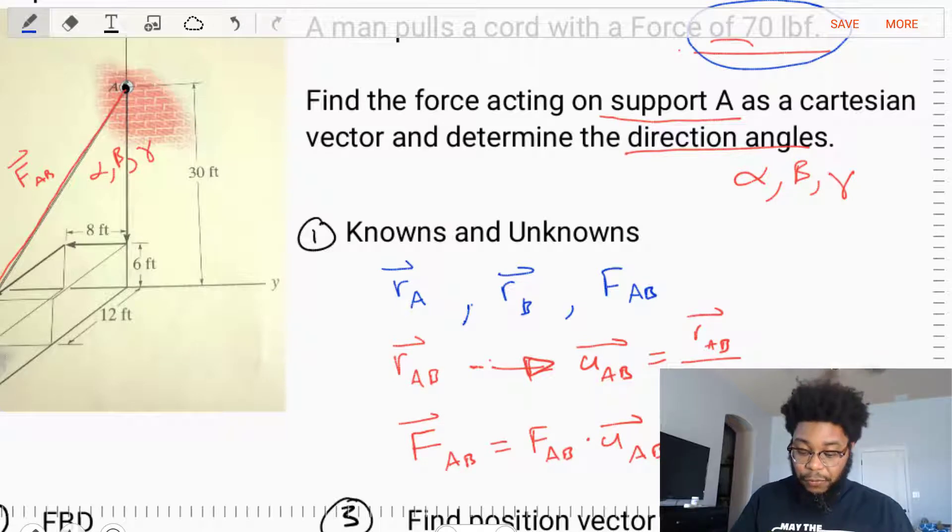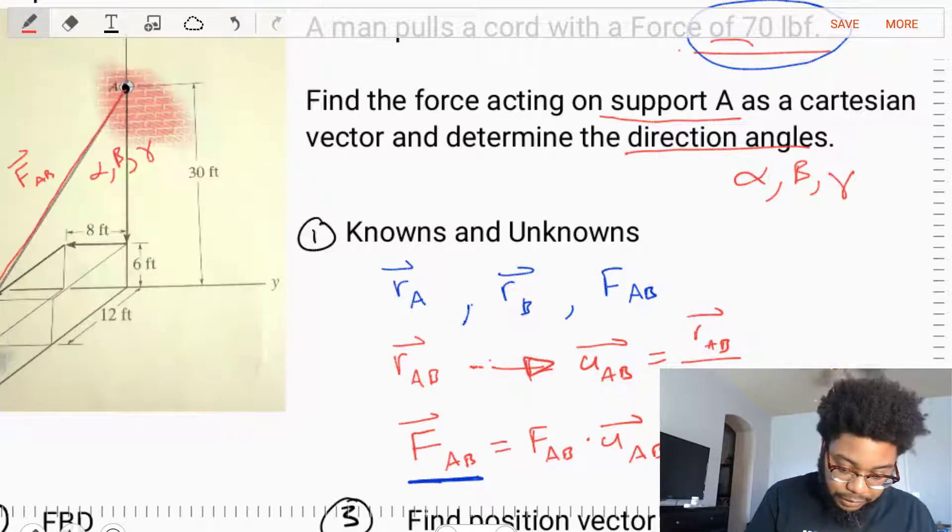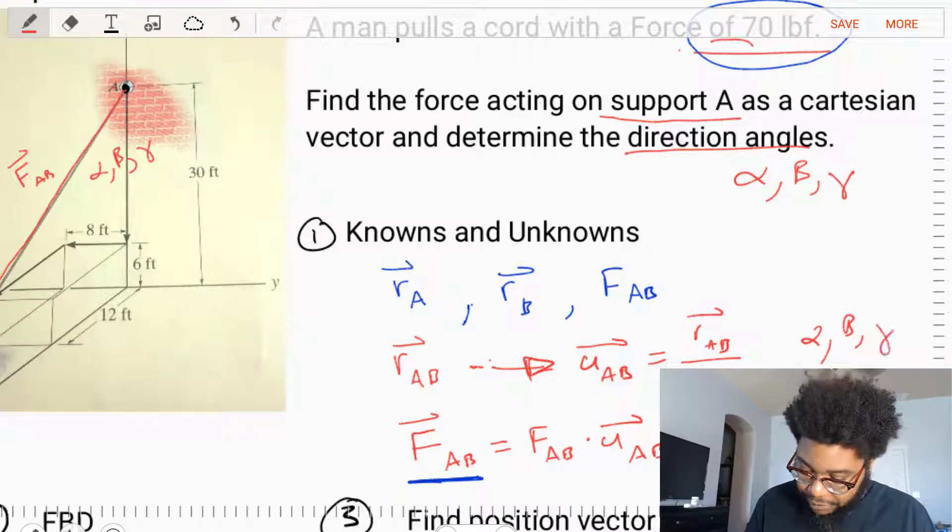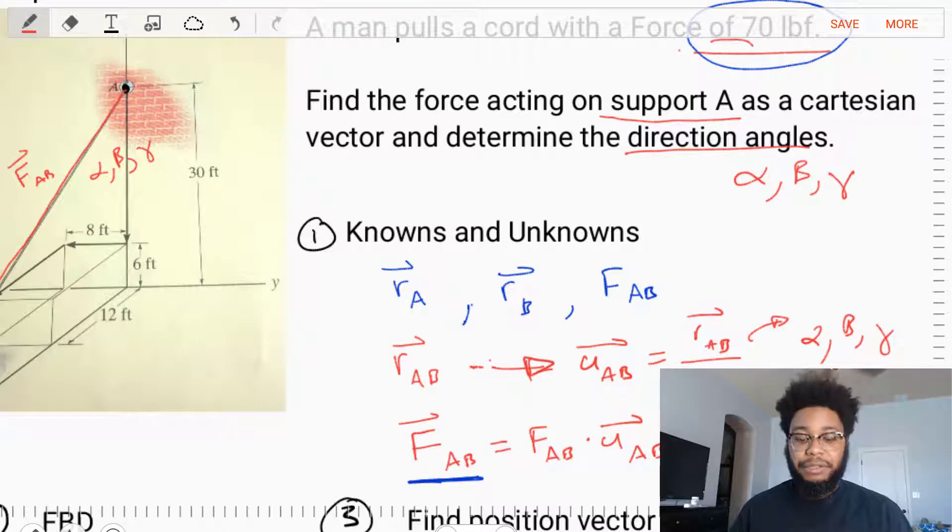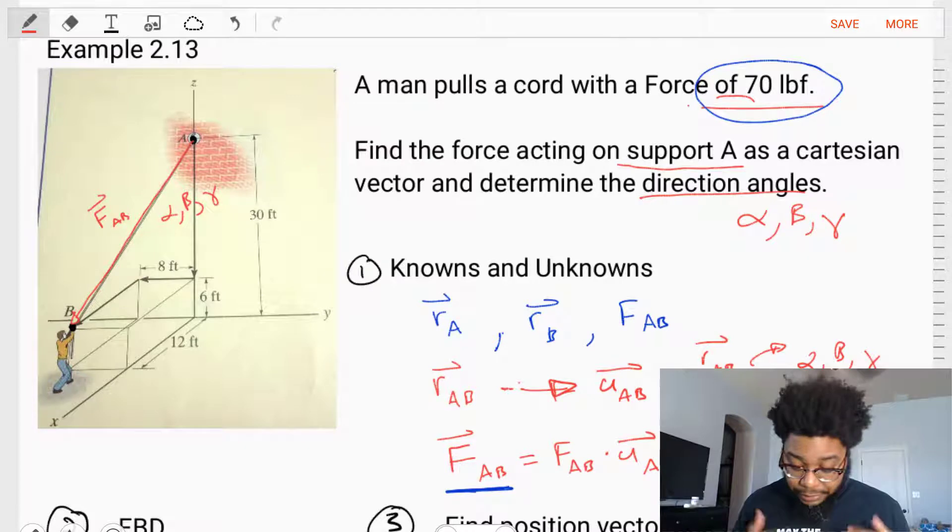And we have a series of calculations that we need to make in order to find our force vector. The main unknown here is the force vector FAB. But also our Cartesian angles alpha, beta, and gamma, which are going to come out of that unit direction vector as well. So, we kind of got this figured out. Let's go through the process of solving this problem.